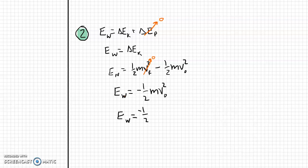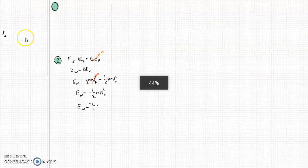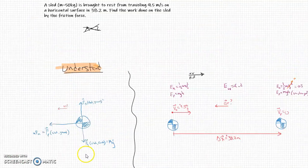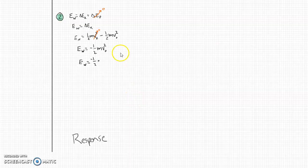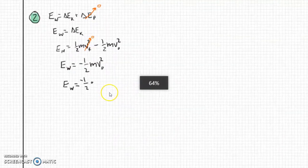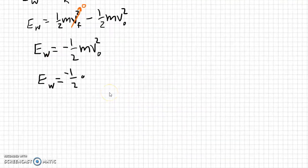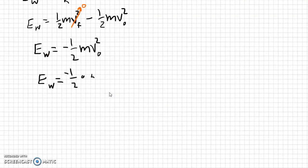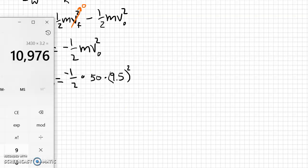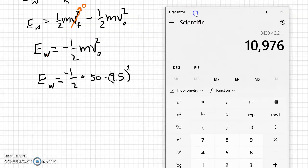Let's go ahead and substitute our numbers in now. So we're going to get a minus one-half times the mass. I don't remember what that was. Let's go up here and look. The mass was 50 kilograms. So 50 kilograms times the velocity squared. And I do remember what that was. It was 9.5. And the biggest thing to watch out for here is that you don't forget to square it.